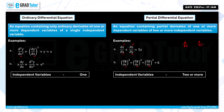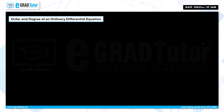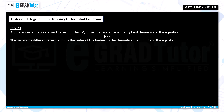In this playlist, initially we will go through the different types of ordinary differential equations, how to frame an ordinary differential equation, what are the solution methods, and subsequently we will go into partial differential equations. Now let us see what is order and degree of an ordinary differential equation. The order of a differential equation is the order of the highest order derivative that occurs in the equation.